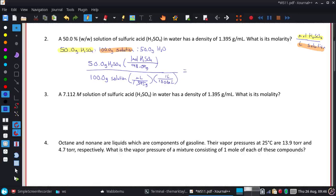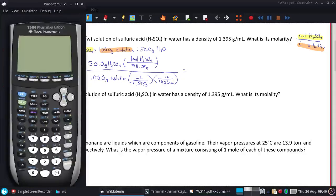When I do this in the calculator, I'll do two separate calculations. I'll take 50 and divide by 98.09 to get moles of H2SO4. Then I'll take 100, divide by 1.395, and divide by 1000 to get the volume in liters.